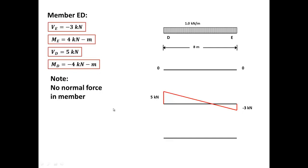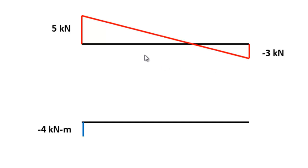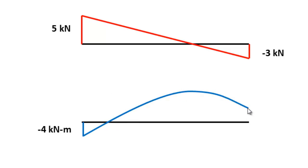The value at the end is negative three — that's the shear at point E. For the moment, we start at negative four from our analysis and end at four at the other end. Take a look at the shear diagram — it crosses the horizontal axis at a point, and whenever the shear diagram crosses the horizontal axis, that means there is a maximum moment at that point. The moment diagram is going to be curved because the shear is gradually decreasing.